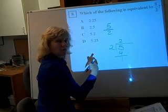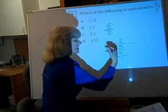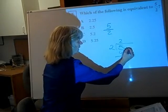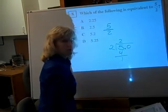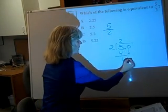But since we're going for the decimal equivalent, we want to divide until we get a remainder of 0. And so we can add a decimal point and as many zeros as we need to finish the problem. So we'll add one at a time.